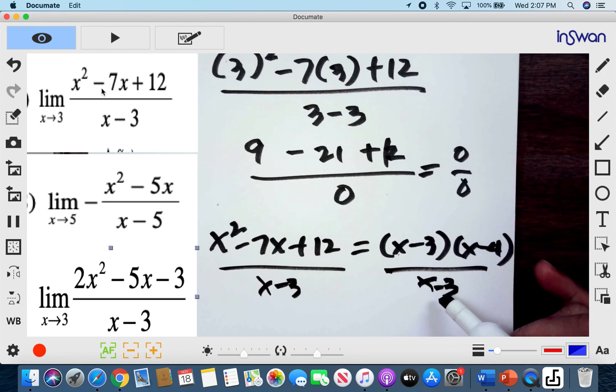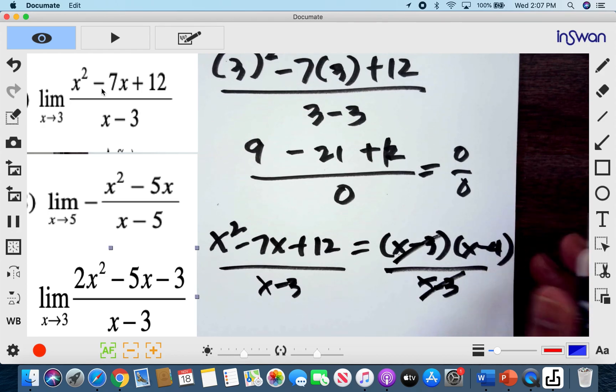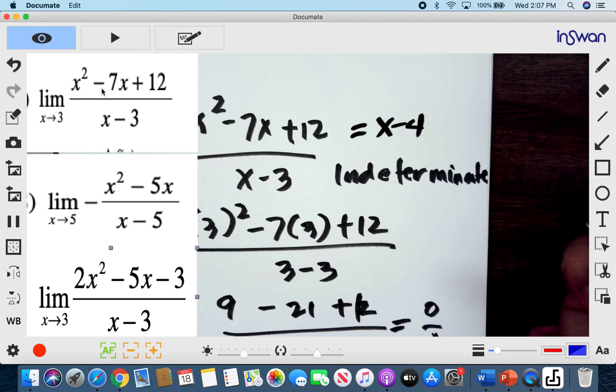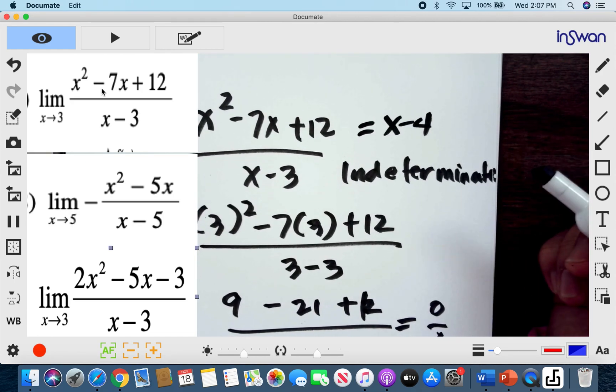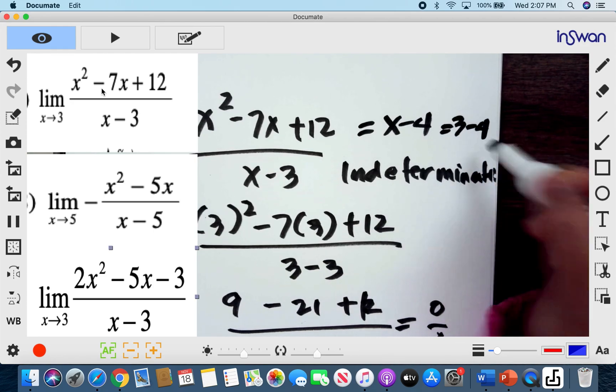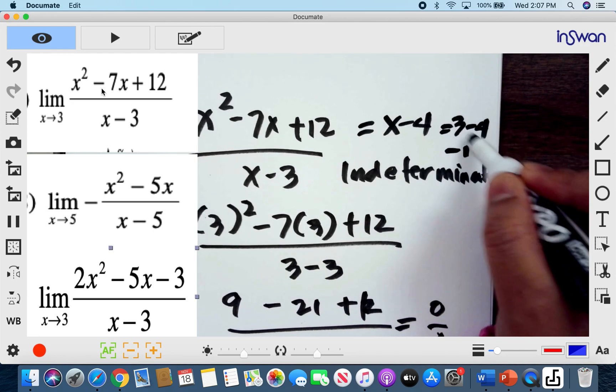And so as you can see, we can cancel x minus 3. Now we have a simplified version of our expression to be x minus 4. And then after that, we can plug in back to our equation. Since our x is 3, so this now becomes 3 minus 4. So our limit is negative 1.